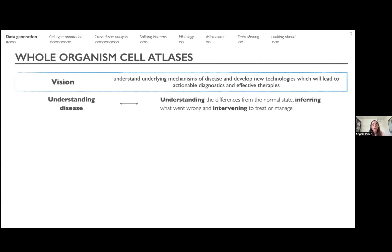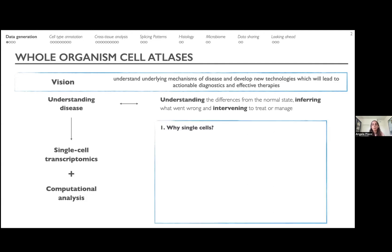We are using a combination of single-cell transcriptomics and thorough computational analysis. Let me try to convince you why single-cell transcriptomic data is the right approach. I'll explain why each individual cell matters, using a glass of juice and some individual fruits as a reference for what organ, tissue, and cells can mean.